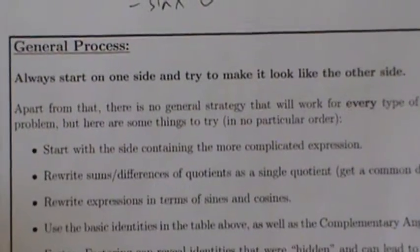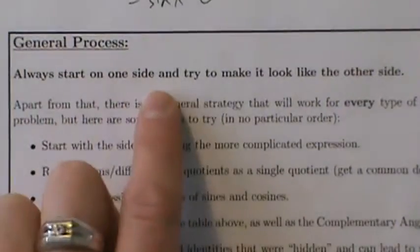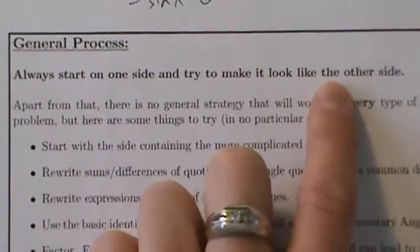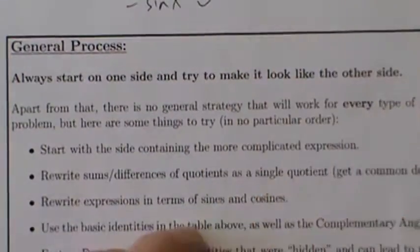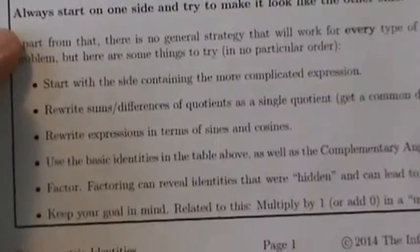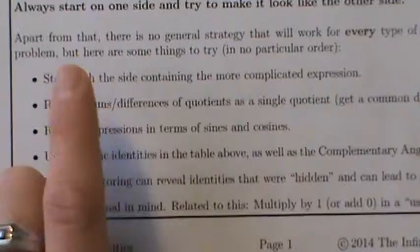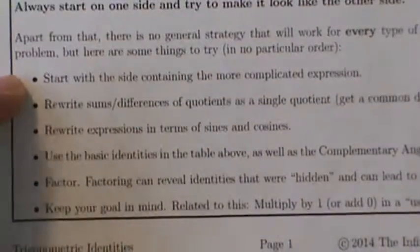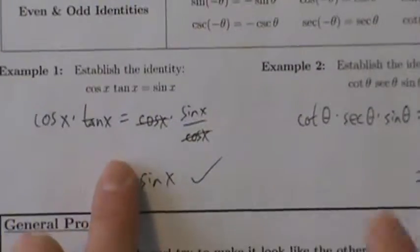That's the general process. The only thing you're always going to do in every problem is start on one side and try to make it look like the other side — don't manipulate both sides at once. Leave the other side completely alone and just work on one side. Apart from that, try some of these strategies in no particular order. We're going to use this general process in the examples coming up — examples one and two here, and example three is coming up in the next video.